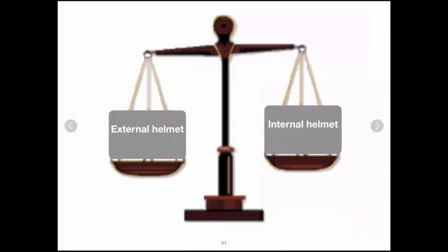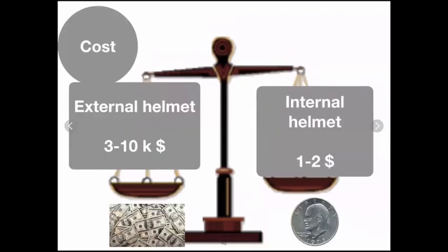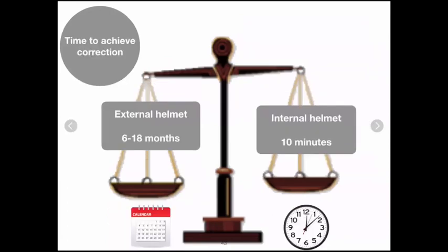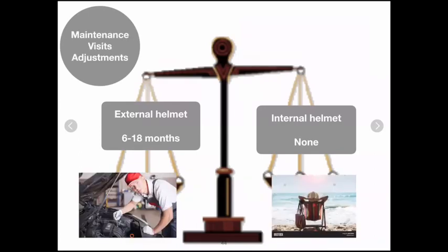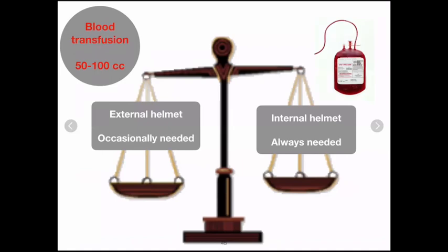Let's compare the external helmet versus the internal helmet. The external helmet costs $3,000 to $10,000, while the internal helmet costs $1 — the price of the silk suture. The external helmet needs to be worn for 6 to 18 months, while the internal helmet takes 10 minutes to ligate your sutures. The external helmet requires regular visits to the helmet center for 6 to 18 months, while with the internal helmet, you can go to the beach and enjoy your life.